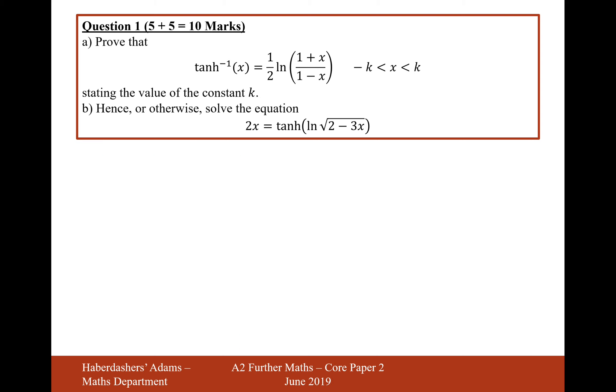Moving on to part B then. Hence or otherwise, solve the equation 2x equals tanh ln of the square root of 2 minus 3x. So if we inverse the tanh onto the other side, so tanh inverse 2x equals ln root 2 minus 3x.